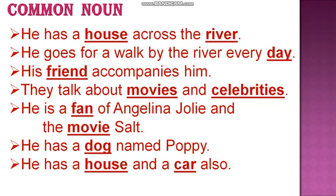So students, now let's see some more examples. 'He has a house across the river. He goes for a walk by the river every day. His friend accompanies him. They talked about movies and celebrities. He is a fan of Angelina Jolie and the movie Salt. He has a dog named Poppy. He has a house and car also.' Here are some bold and underlined words.